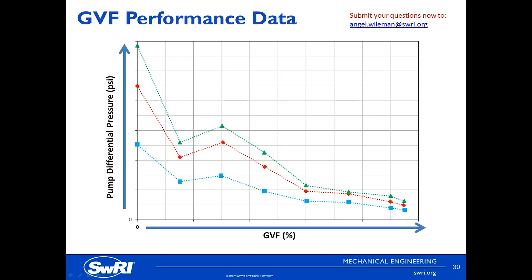Due to the proprietary nature of the testing, the data presented here is in non-dimensional format, however some trends can be observed. Each line represents a fixed operating speed for the pump assembly, with the green line being the highest frequency and the blue line being the lowest tested. From the data, you can see a distinct drop in pump performance from the zero GVF condition to the maximum GVF tested — which was well above 70%.